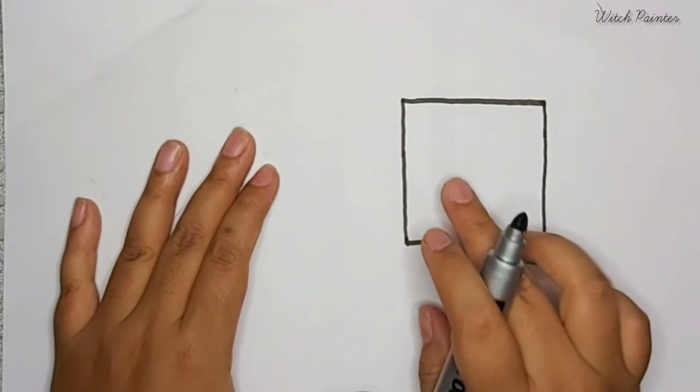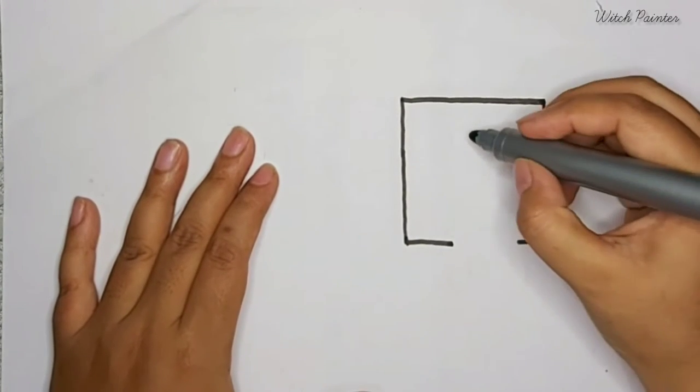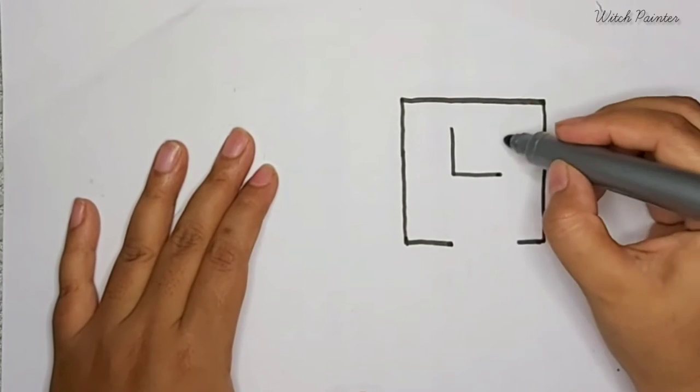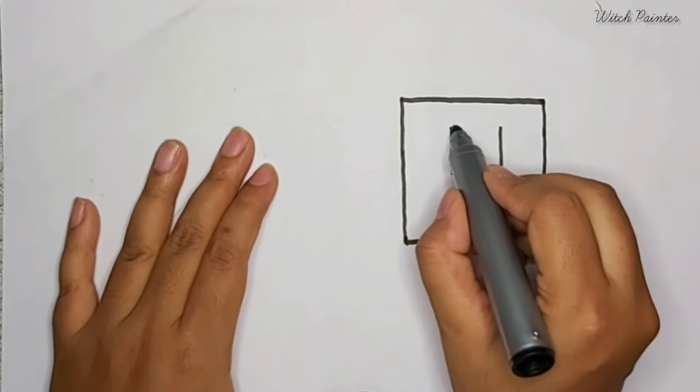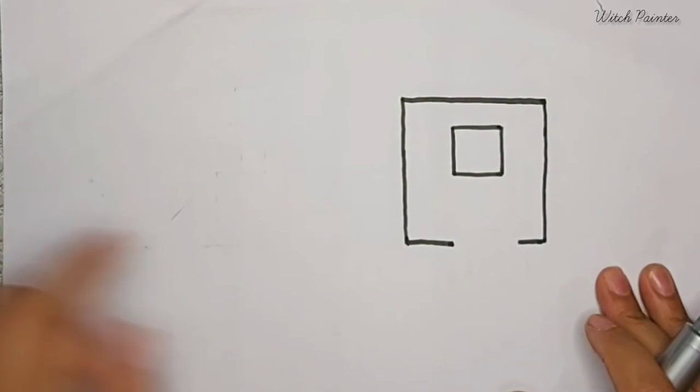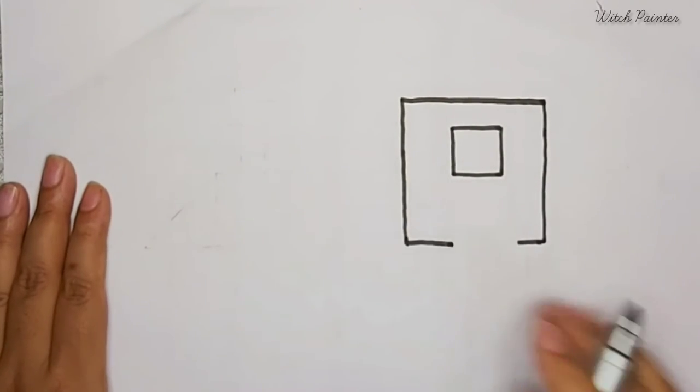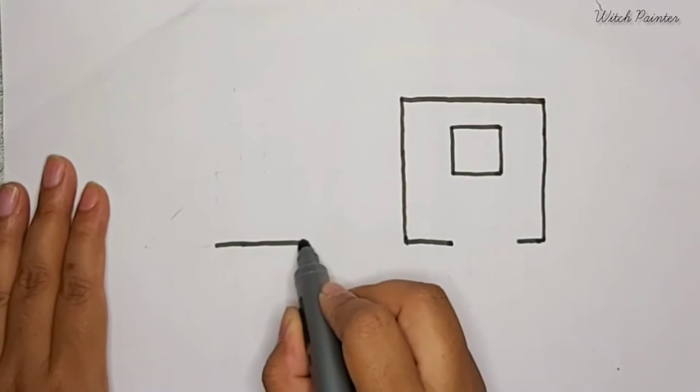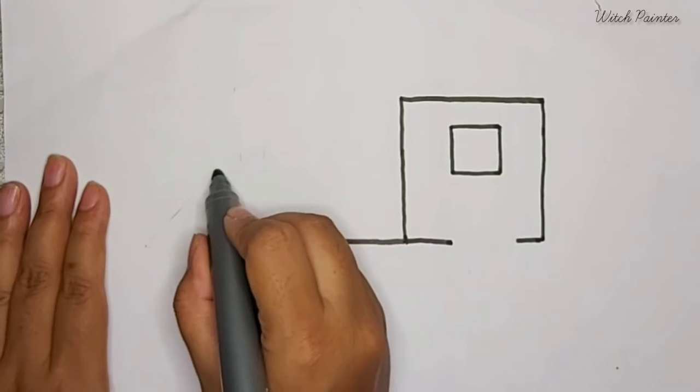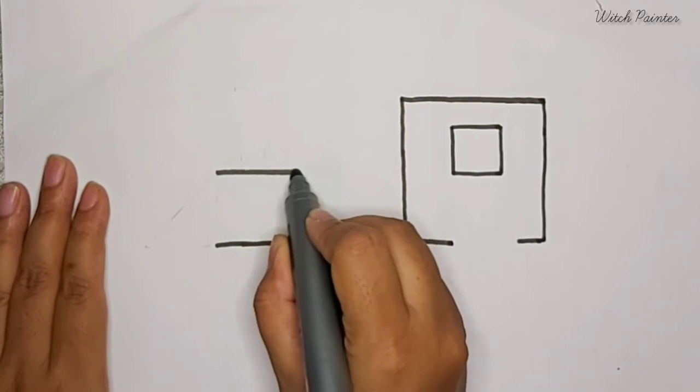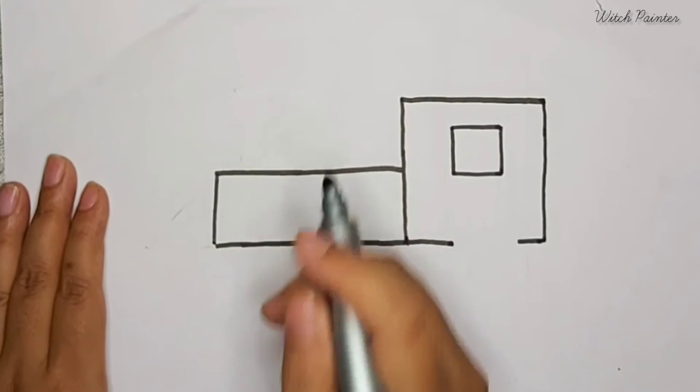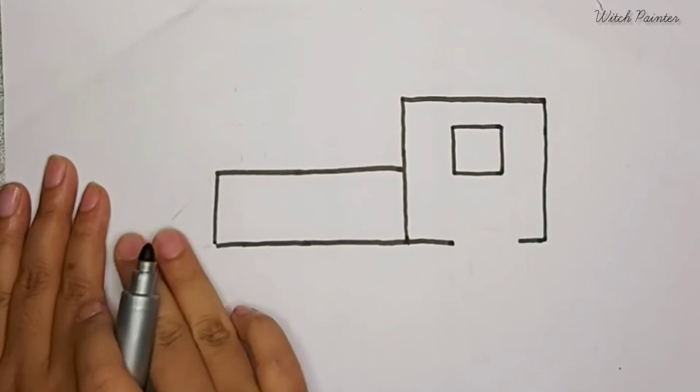Now you will draw another square inside the square for the window. Now you will draw a rectangle over here, and now you will draw a triangle over here.